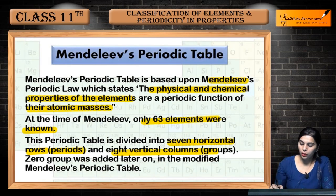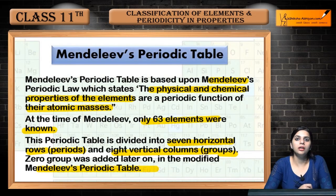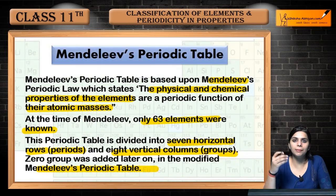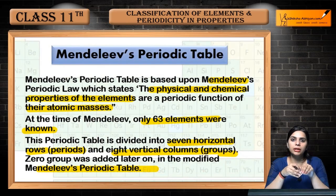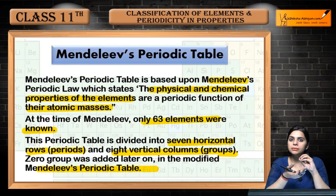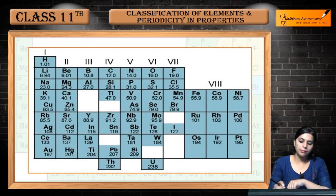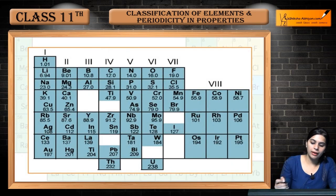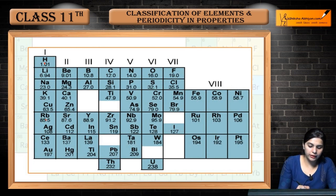These eight vertical columns are also called groups. Zero group was added later on in the modified Mendeleev's periodic table. When modifications were applied to the periodic table to address shortcomings and drawbacks, the first modification added was the zero group.